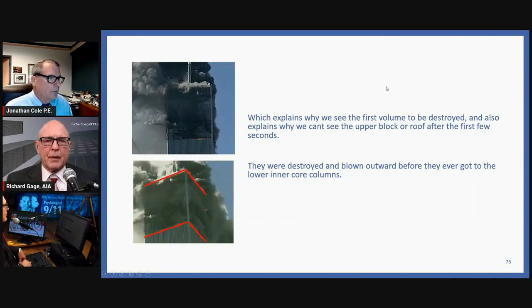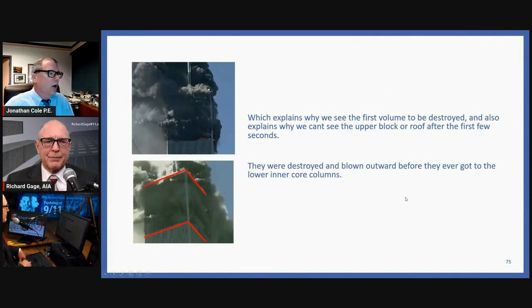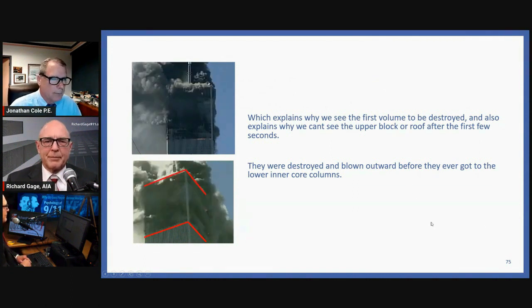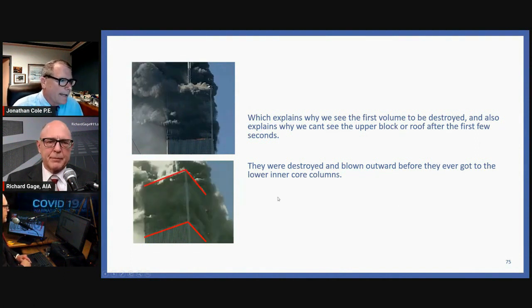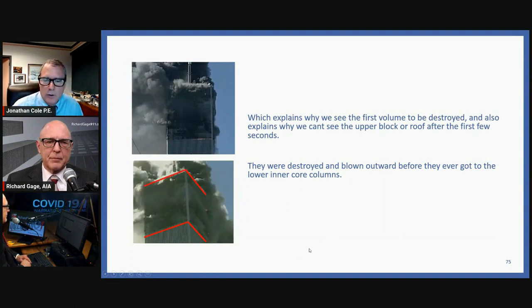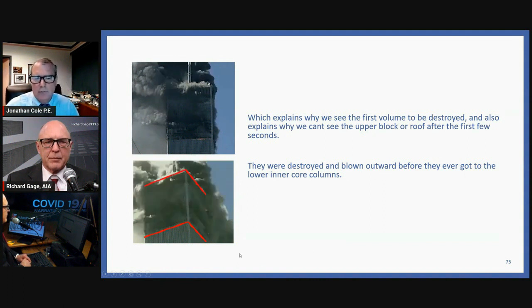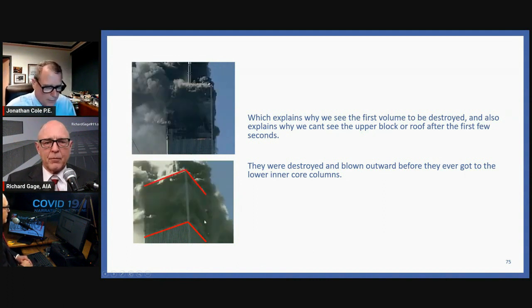And that explains why the first volume to be destroyed was the upper block. It also explains why we can't see that upper block after the first two or three seconds, it's gone. They were destroyed and blown outward before they ever got down to those lower inner core columns. And those lower inner core columns that were around, I think around the 60th floor, roughly. So they had to have been destroyed or that spire would have buckled.